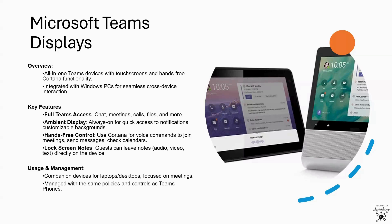Teams display devices are typically used as companion devices alongside a laptop or desktop PC. The typical user for a Teams display won't necessarily be a user who would otherwise use a Teams phone and won't always require Teams phone capabilities — for example, some users might only use their device primarily to join meetings. From an administrator's perspective, a Teams display provides the same management capabilities as a Teams phone and can be subject to identical policies or rules.